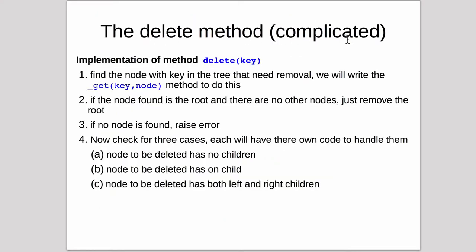Now we're going to cover the delete method, which is complicated. We're going to implement the delete method on a key. If the key exists, it's going to return it. We're going to implement an underscore get method to do the find. We want to find the node with that key in the tree that needs removal, and we're going to write this method to do that.